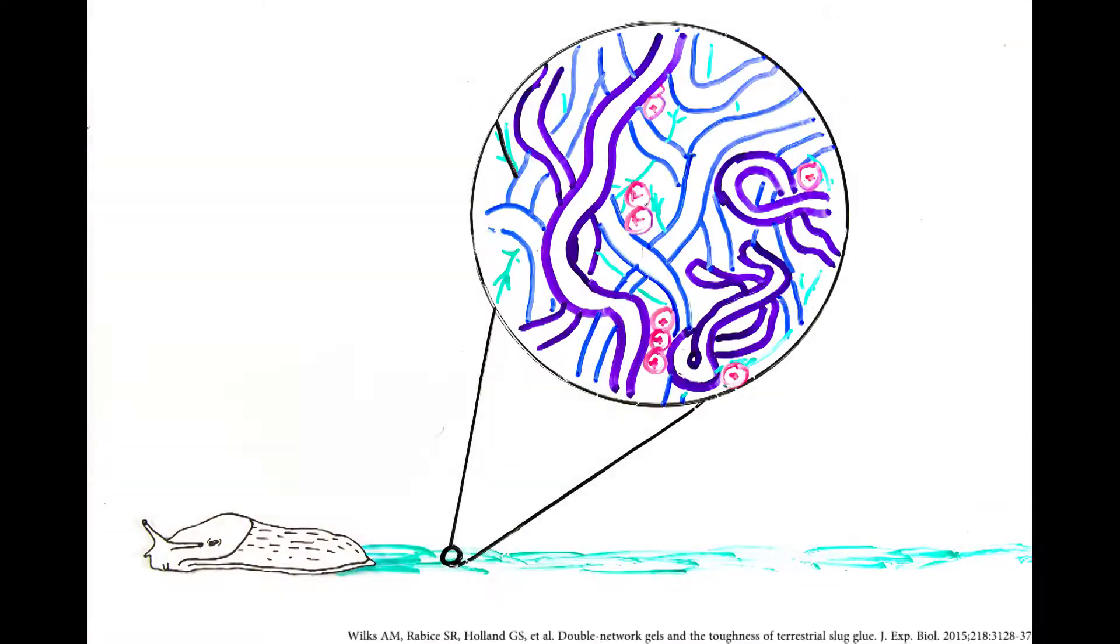What gives slug slime these properties? The answer lies in its structure. Zooming closer reveals that slime is a tangle of proteoglycans, proteins, and ions.